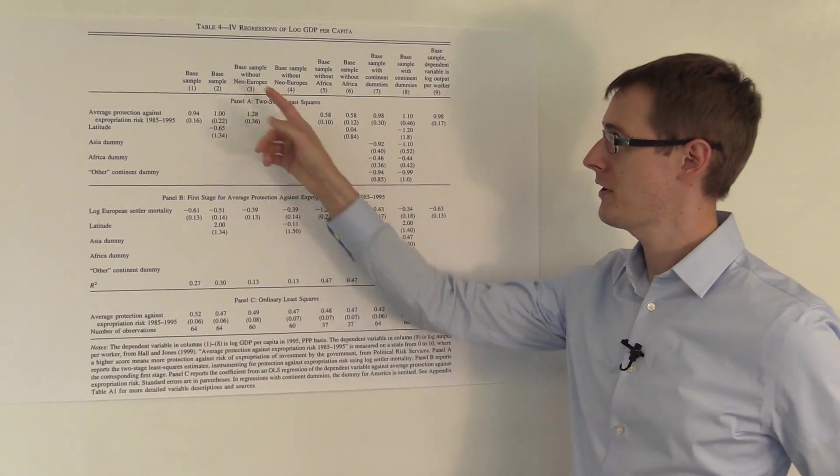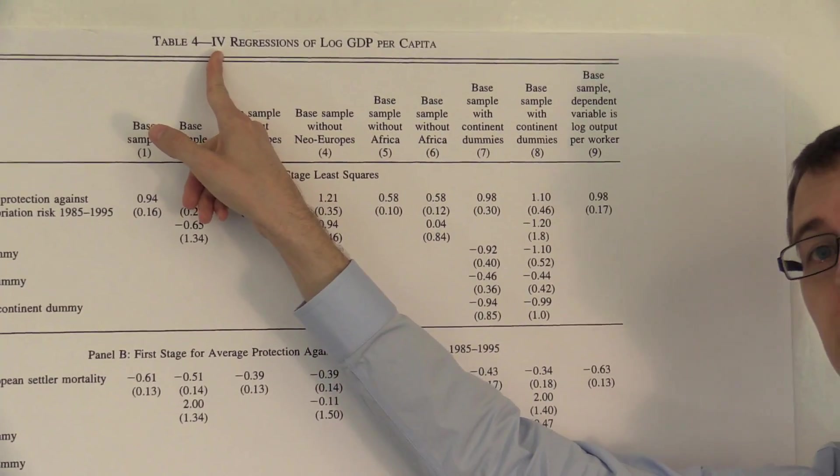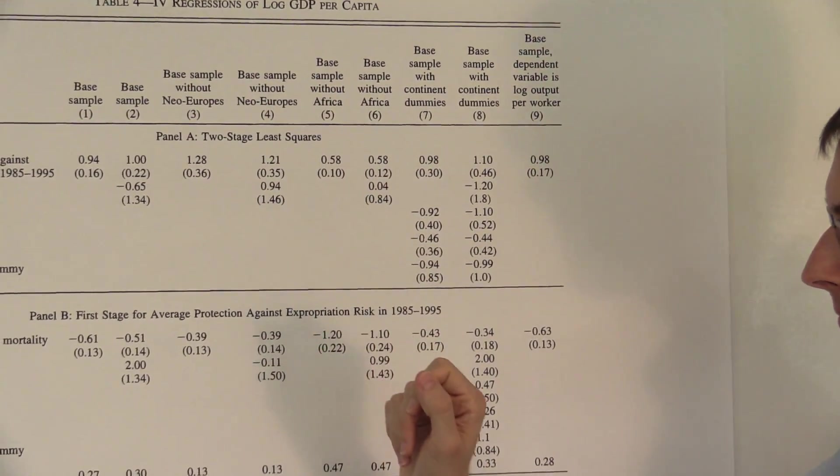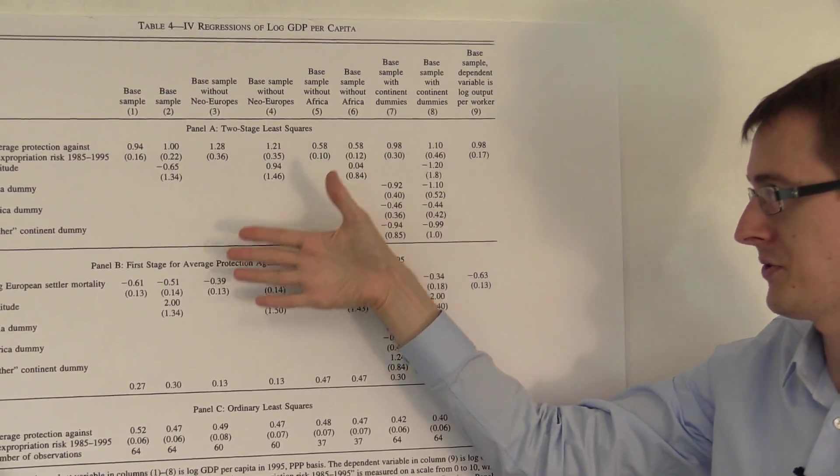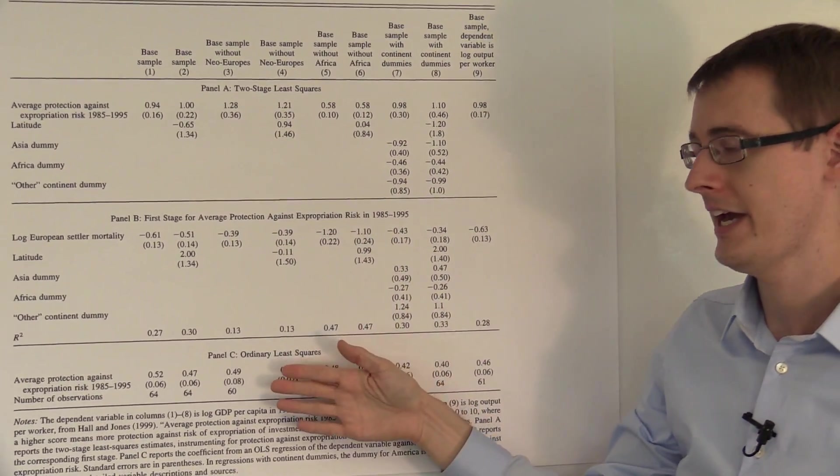So here in their Table 4, titled IV Instrumental Variables Regressions, they've got three panels: panel A, B, and C.